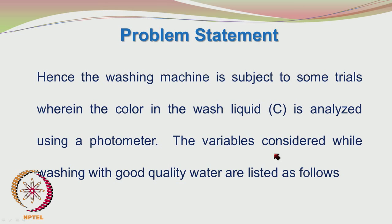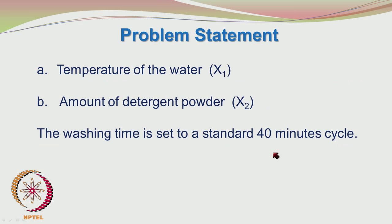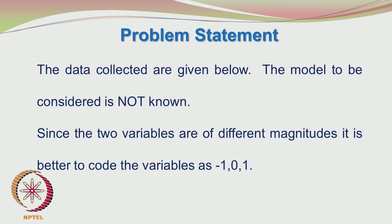The variables considered while washing with good quality water are listed as follows: temperature of the water X1, amount of detergent powder used X2, and the washing time is set to a standard 40-minute cycle. The data collected are given in the form of a table. We have to develop the model — the model is not given to us.